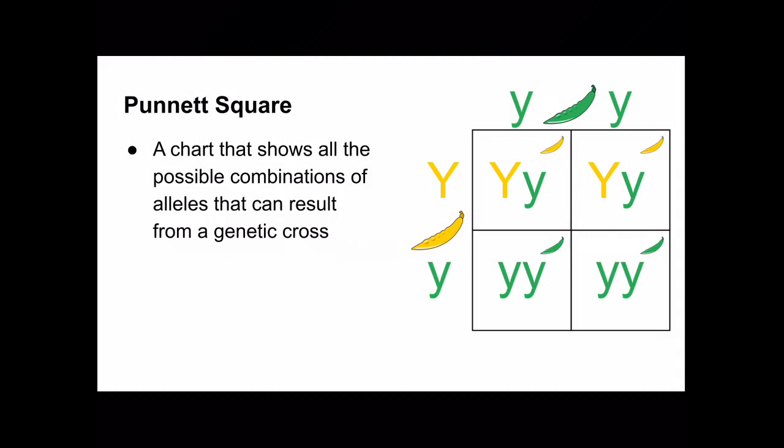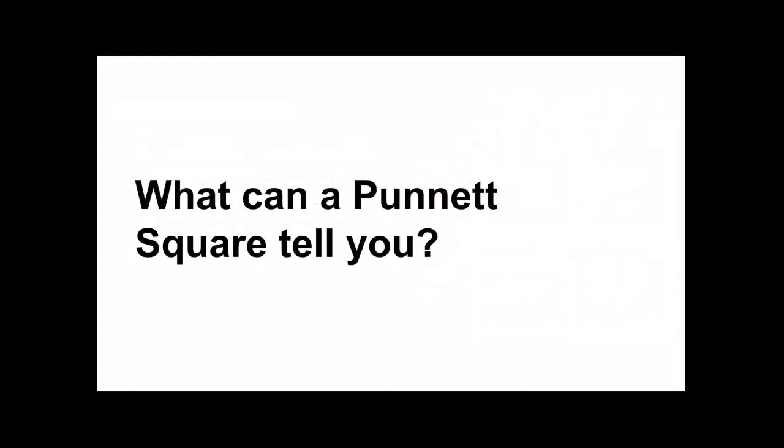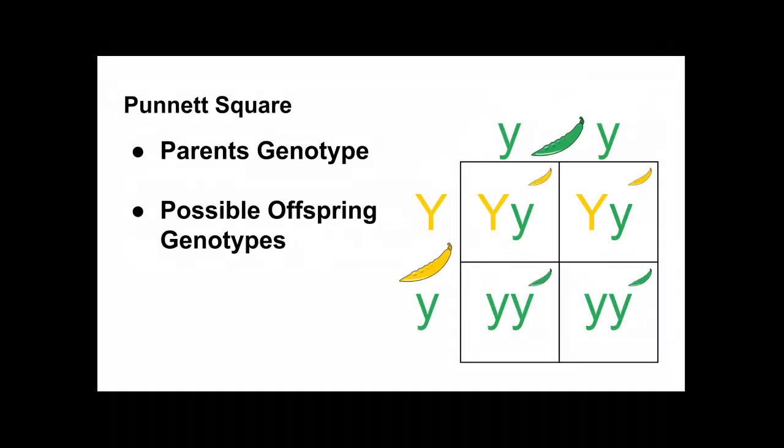This is an example Punnett square on the right. What can a Punnett square tell you? A Punnett square can tell you two things. It can tell you the parent's genotype, there they are on the outside of the square, and it can also tell you the possible offspring genotypes. Those are the ones inside the blue square.